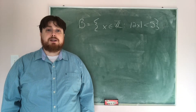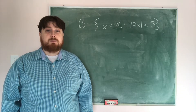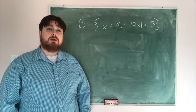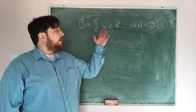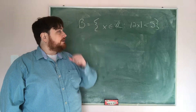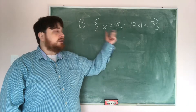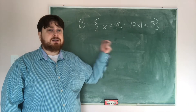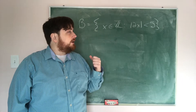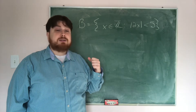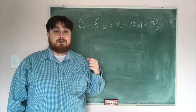Now let's look at a second set defined by a rule. Here we're going to have set B as given by all x in ℤ — that is, all integers x — such that the absolute value of 2x is less than 5.